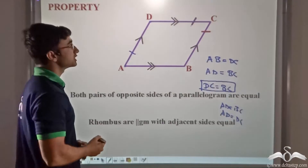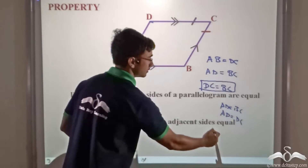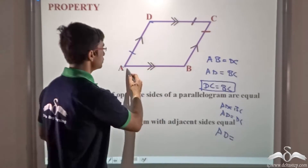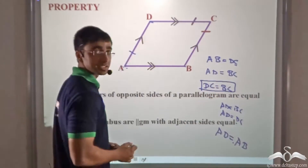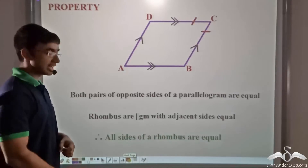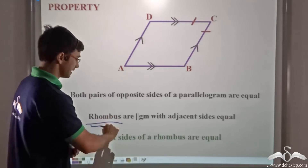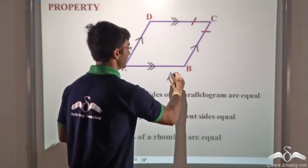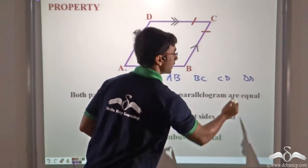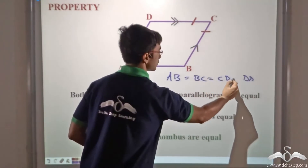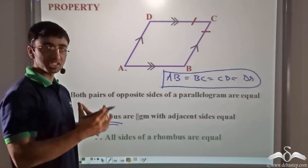We have also seen that DC equals AB. So using these equations, we can write AD equals AB. Therefore, all sides of a rhombus are equal — in other words, a rhombus is a parallelogram where all sides AB, BC, CD, and DA are equal to one another. This is a property exclusive to a rhombus as a special kind of parallelogram.